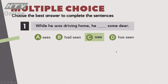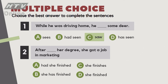Câu số 2: Vì 'after' không có yếu tố đảo ngữ nên A không đúng. B - present perfect không đúng. C - hiện tại đơn không đúng. Đáp án D: 'After she finished her degree, she got a job in marketing.'